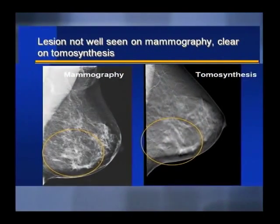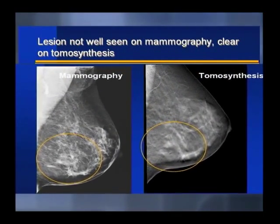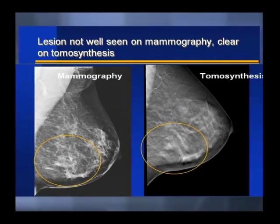Digital Breast Tomosynthesis is a technology that was first developed around 2006. It is a method by which we can reduce superimposition in the breast. One problem that we have in imaging breasts, or really with any radiographic technique such as mammography, is superimposition.